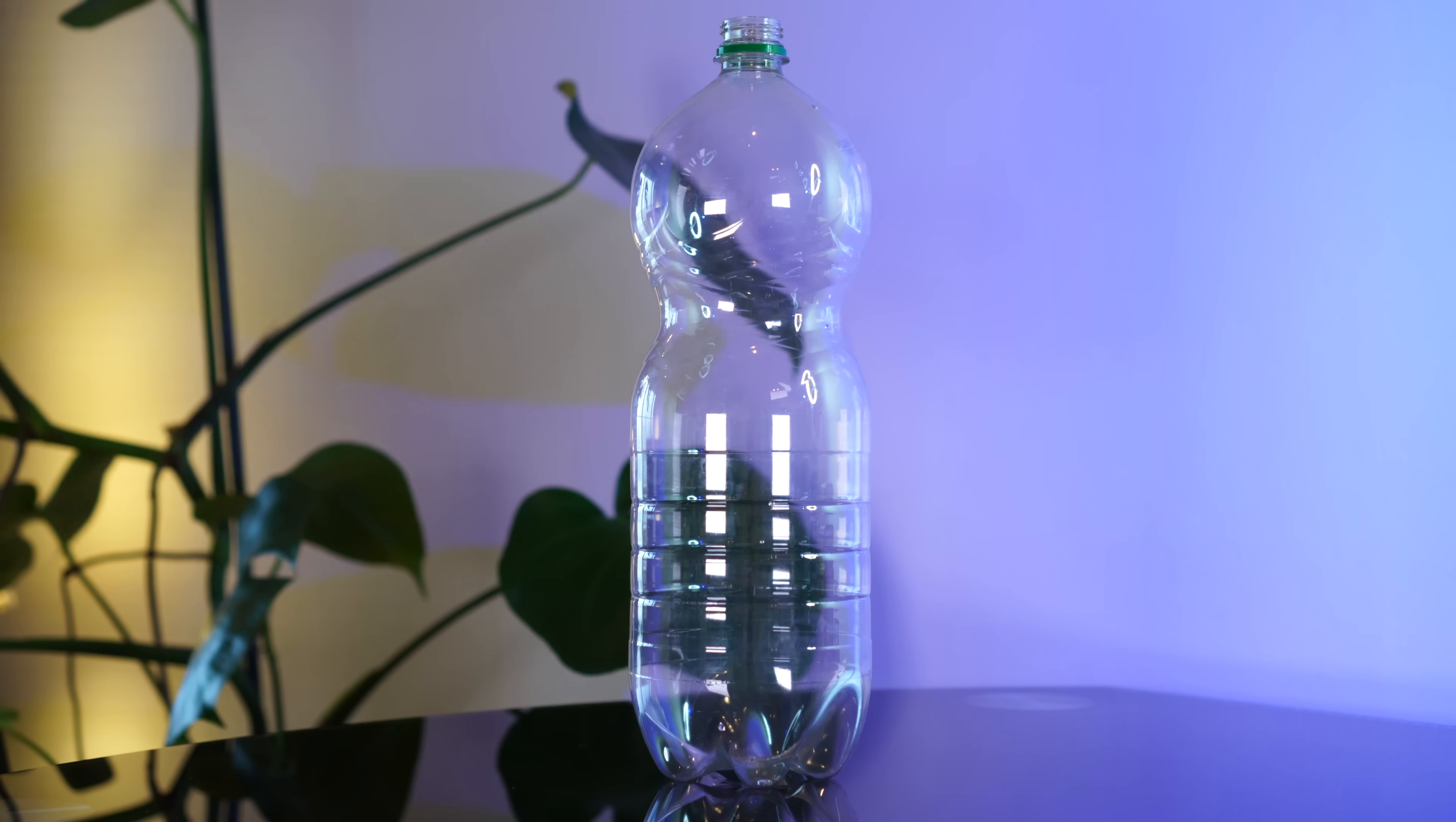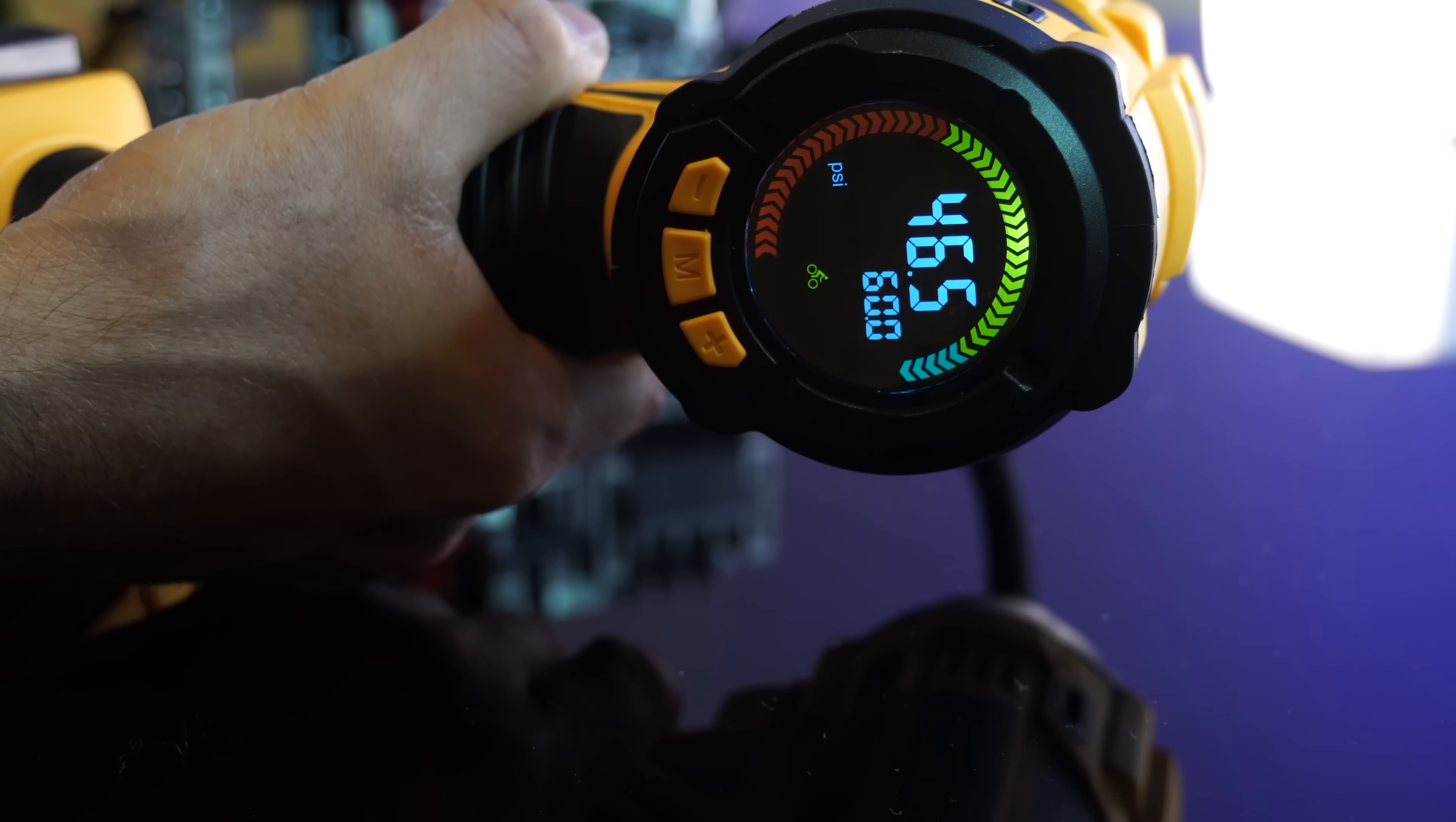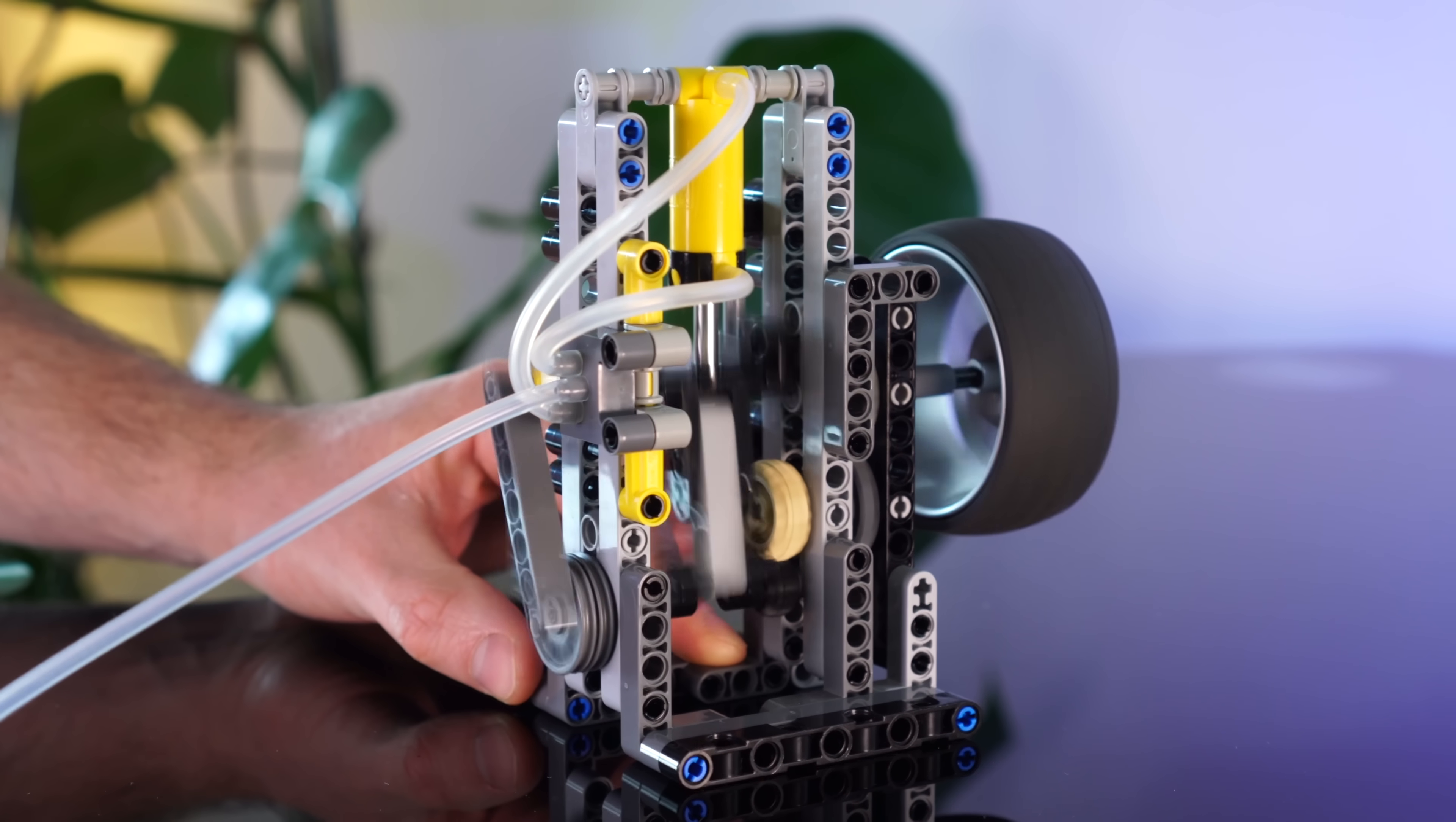Now this soda bottle will supply the air. It works very well by just simply shoving a T junction through the cap. And this compressor will allow us to get about 48 psi before the pipe pops off. And there we have it, a little LEGO pneumatic engine that can hopefully spin some magnets around in our generator.